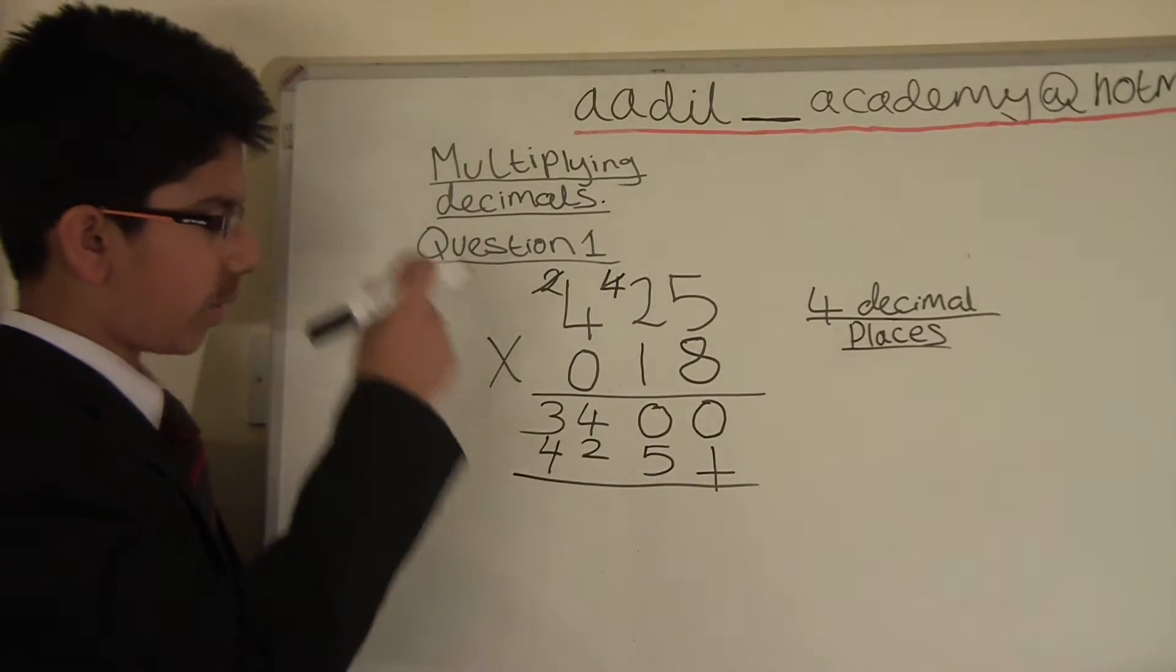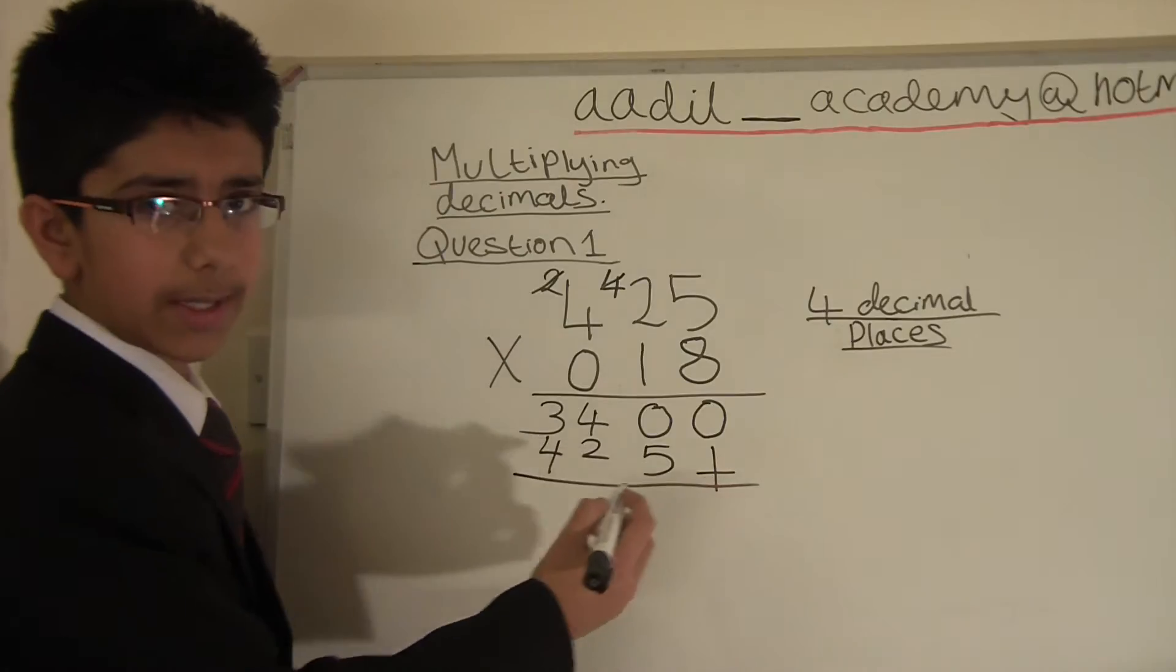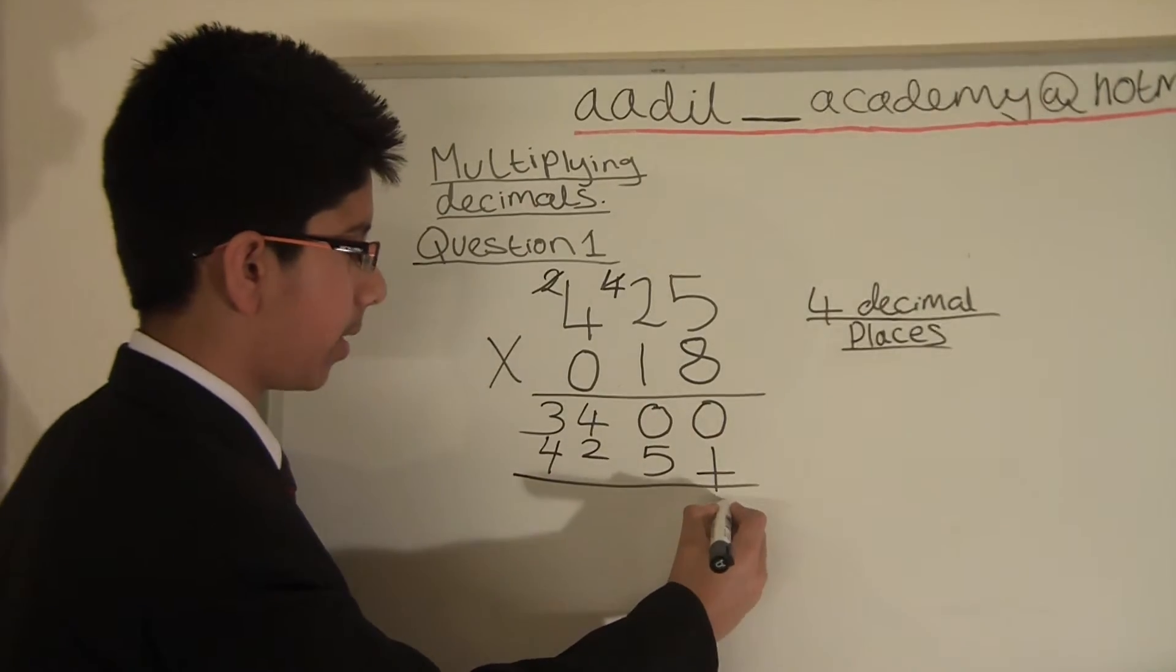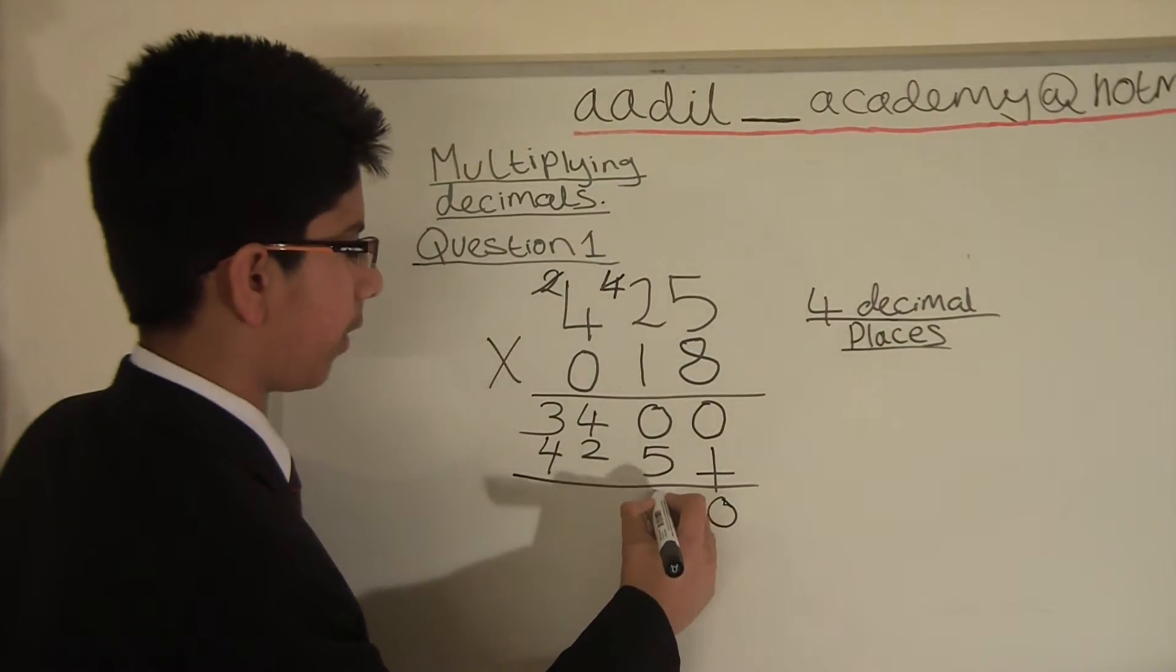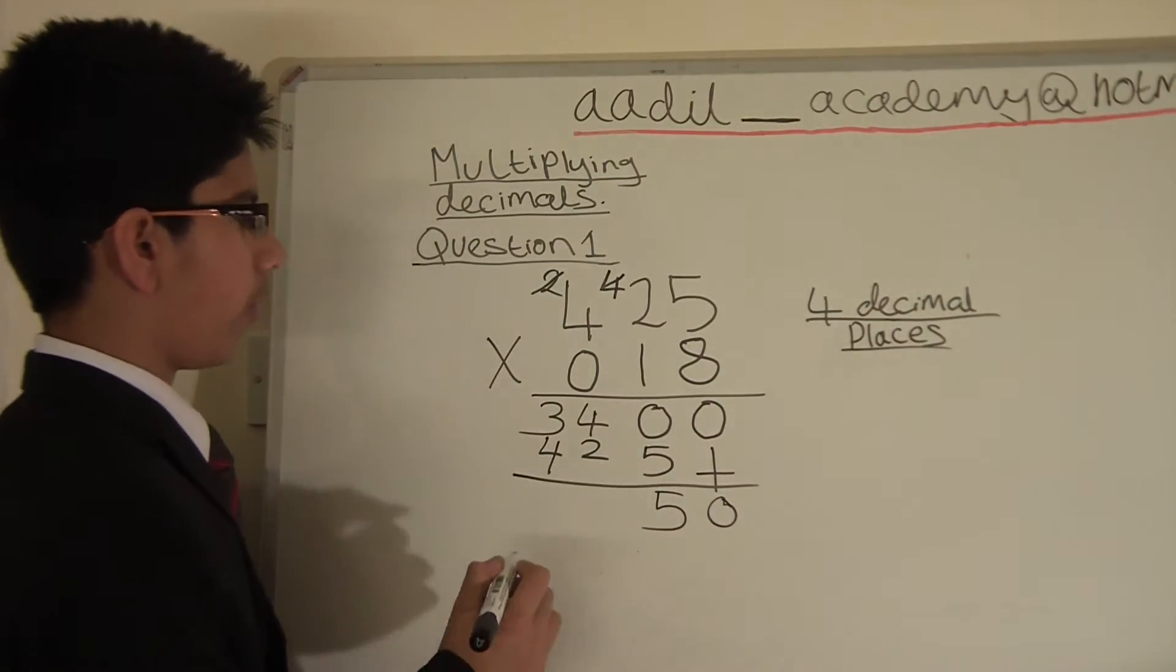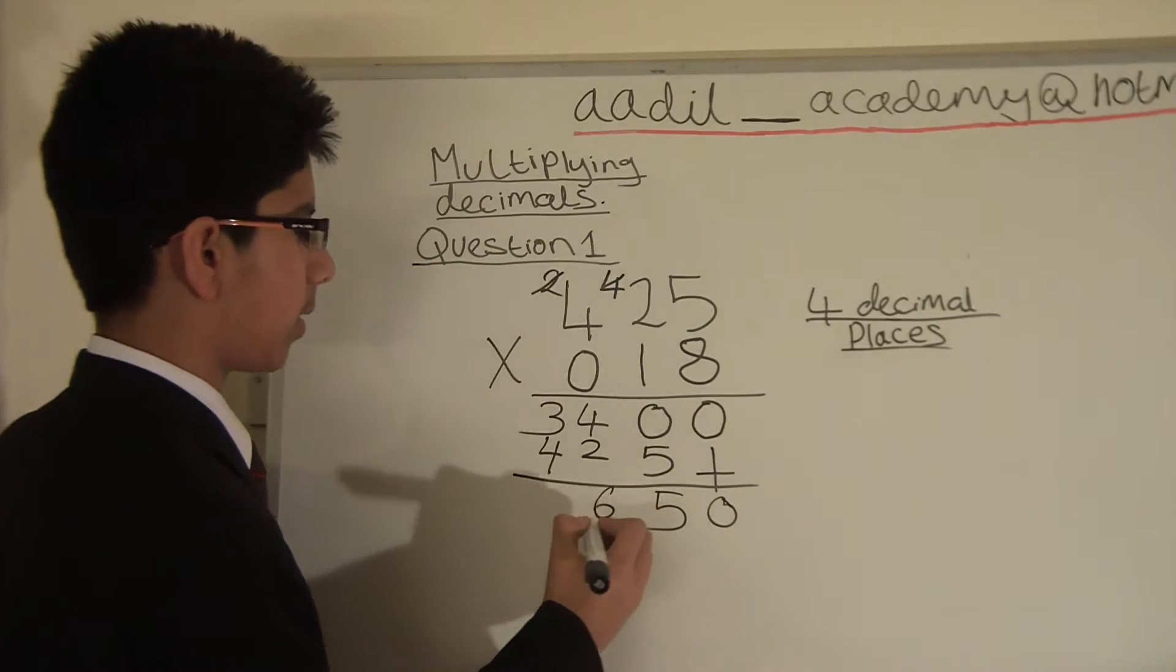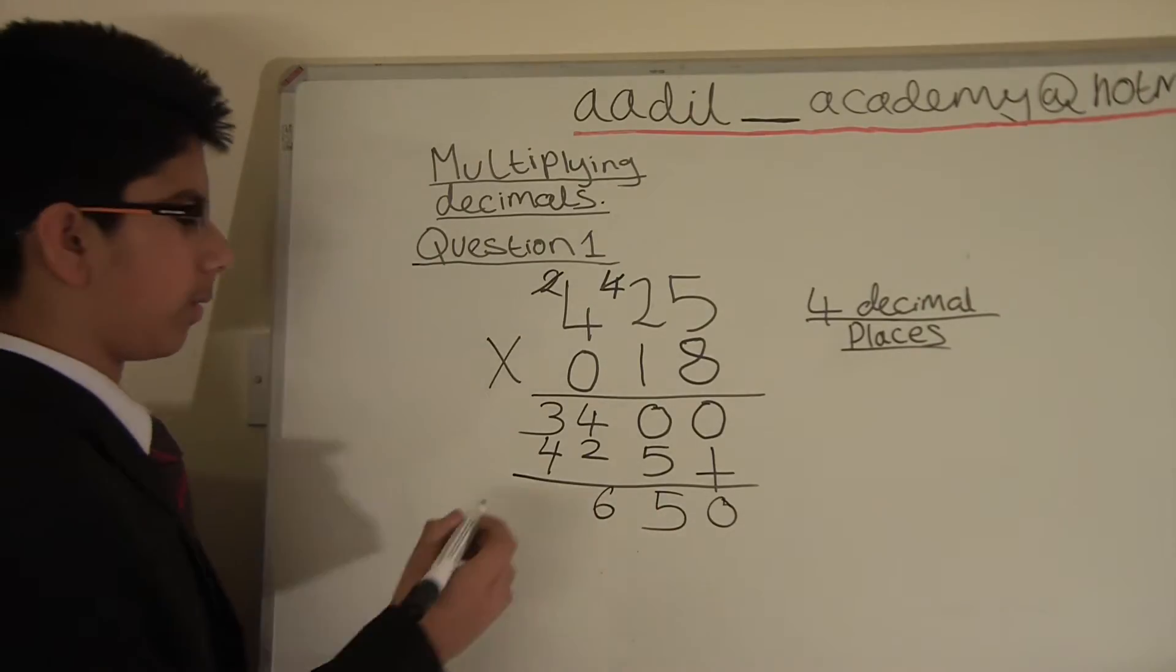Now we add up these two numbers. So the plus stands for 0. So 0 plus 0 equals 0. 5 plus 0 equals 5. 4 plus 2 equals 6. And 3 plus 4 equals 7.